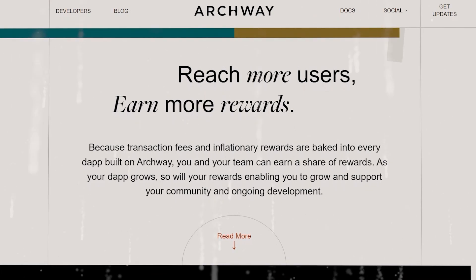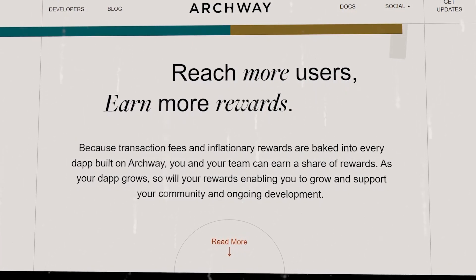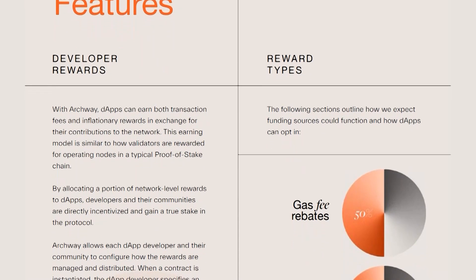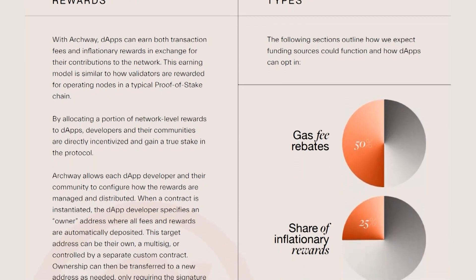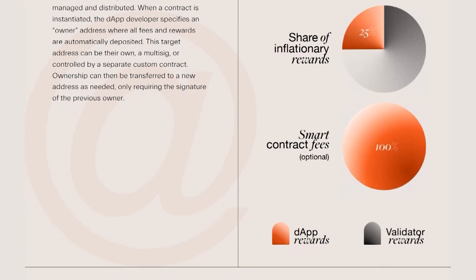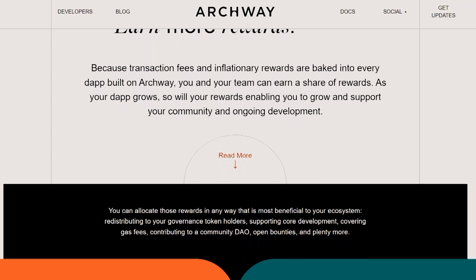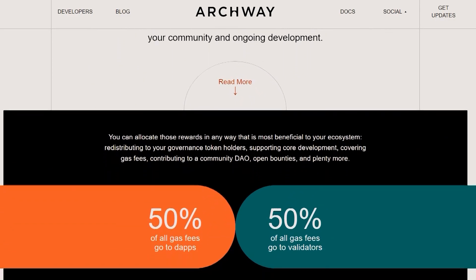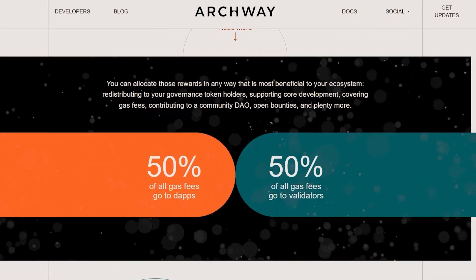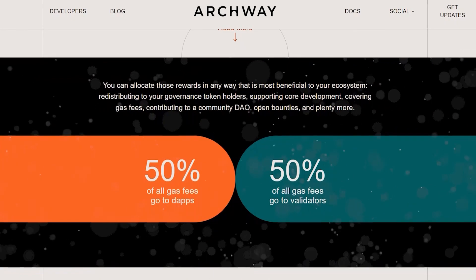Archway allows every DApp developer and their community to customize the management and distribution of rewards. When a contract is created, the DApp creator specifies an owner address to which all fees and rewards are automatically sent. Ownership can later be transferred to a new address if needed. The gas fees reward is probably the most interesting. Unlike many existing platforms, Archway does not burn gas fees and does not distribute them fully to validators and miners. Instead, the collected gas fees are split between DApp developers and validators. When the network launches, the gas fees will be split equally, with 50% going to DApp developers and 50% to validators. From the DApp developers' perspective, they will receive a 50% discount on all gas paid. From the validator's perspective, deferring a portion of the fees in the near term effectively increases transaction volumes, commissions, and increases the value of the network in the future.